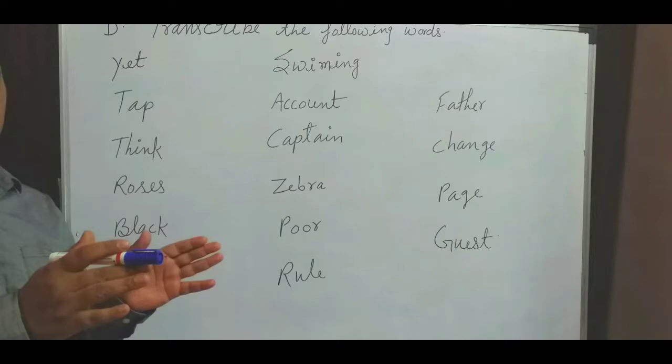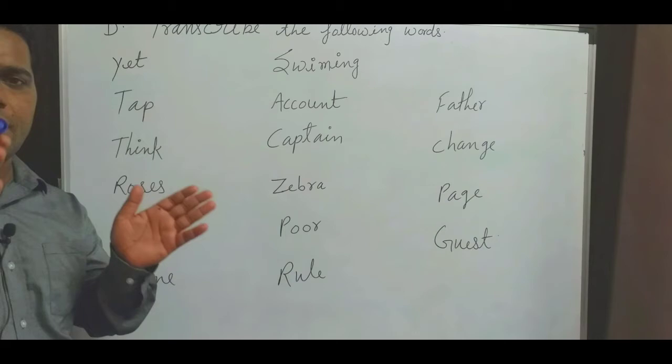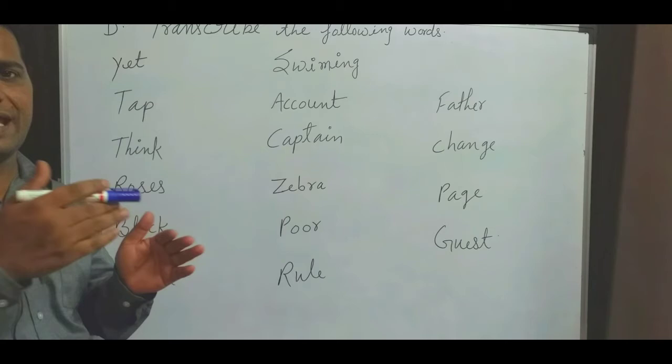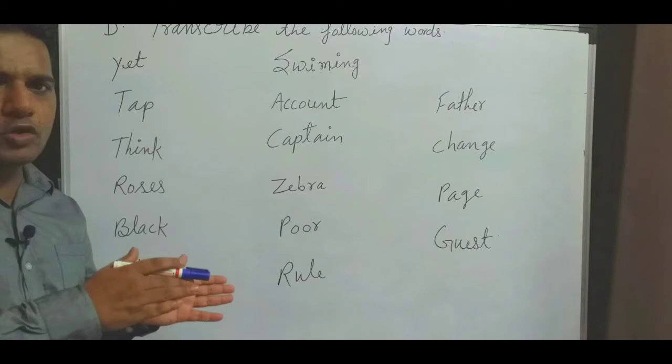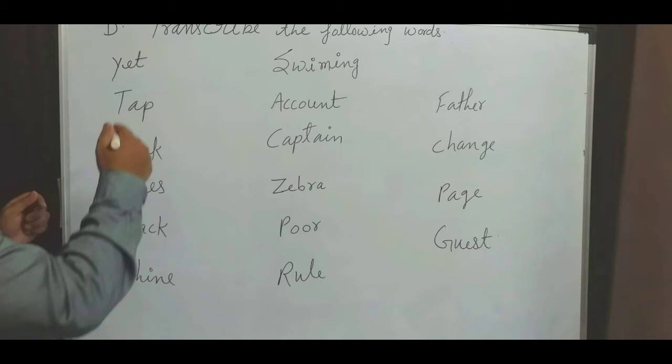In vowels, as I told you, there are two categories: 12 pure vowels or monophthongs and 8 diphthongs. So we will try to transcribe them. The first word is yet, which is the /j/ sound.